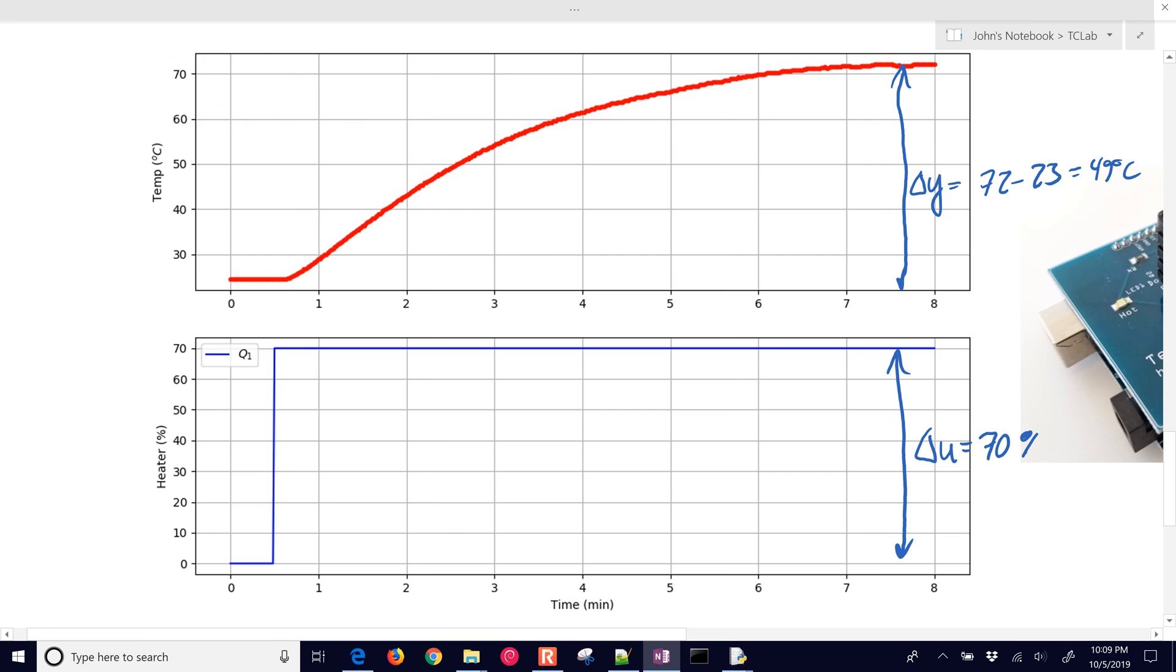That's a percent of the way there. So the very first thing that we can do is get our gain value. So that's going to be KP is going to be delta Y divided by delta U, and so that's going to be 49, and don't forget the units, degrees Celsius divided by 70%.